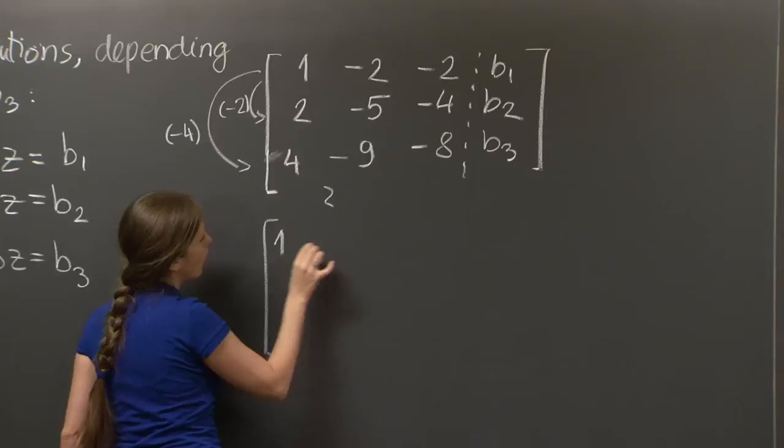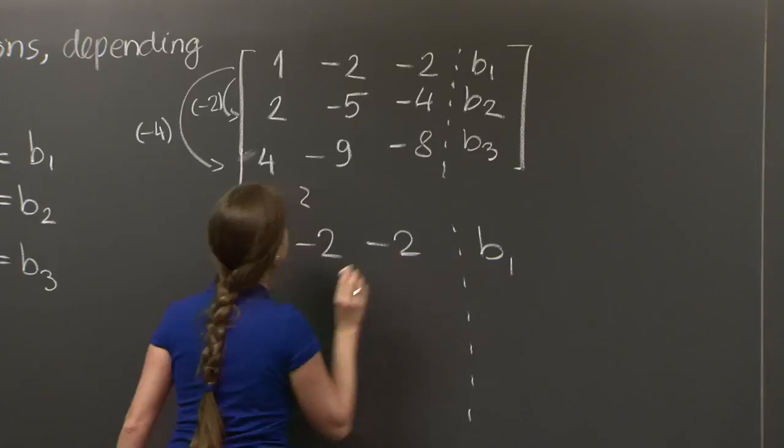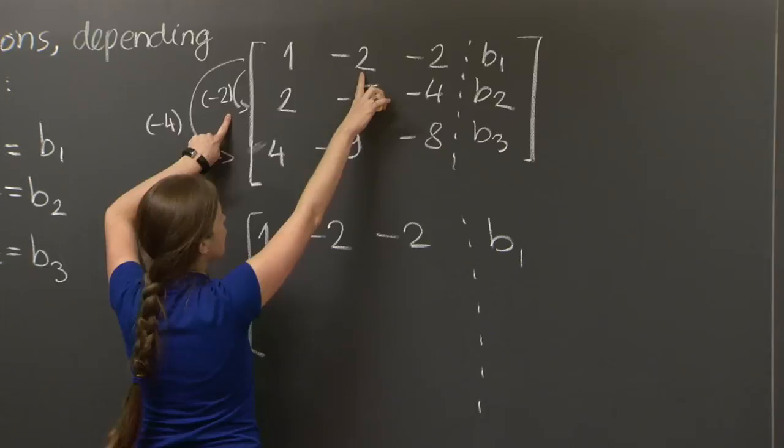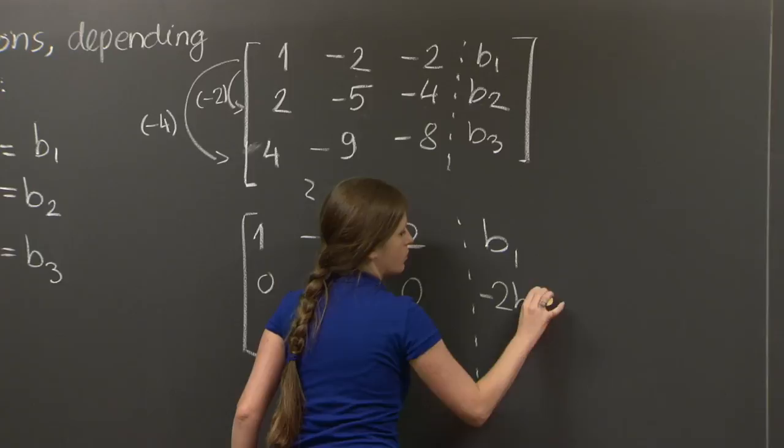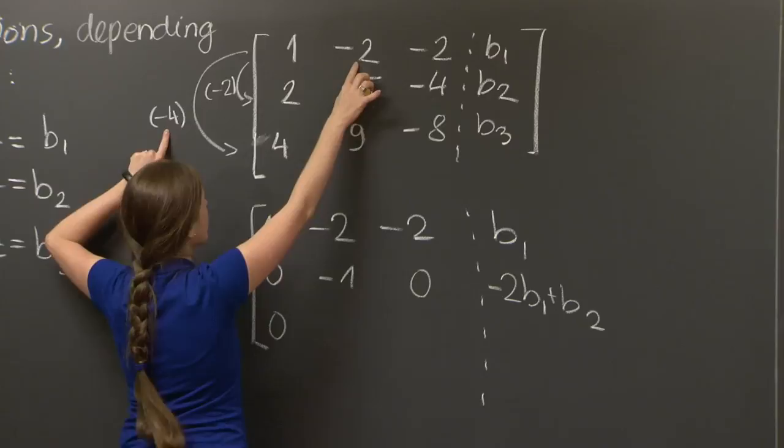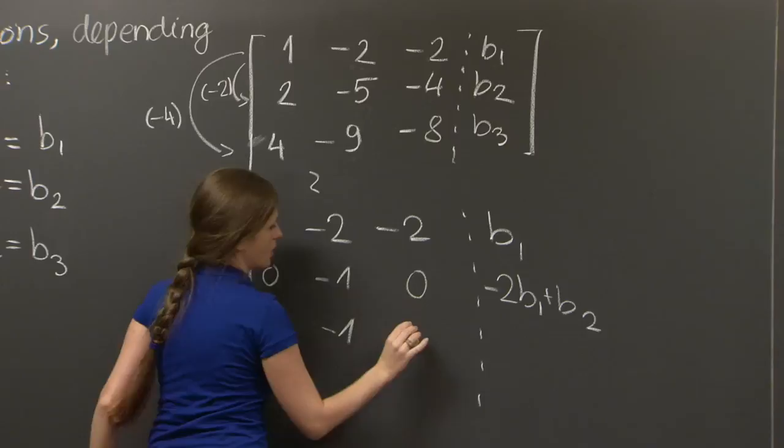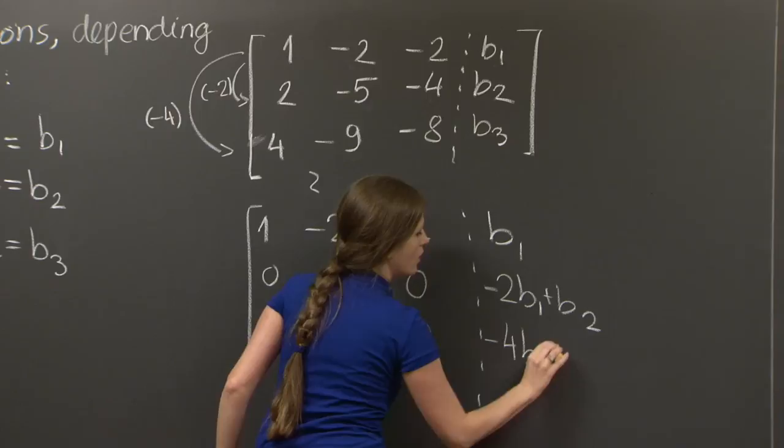And we get 1 minus 2 minus 2 b1, 0, 4 minus 5 is minus 1, 4 minus 4 is 0, and minus 2 times b1 plus b2. And here we get 0, 8 minus 9 is minus 1, and 8 minus 8 is 0. And finally on the right hand side, minus 4 b1 plus b3.